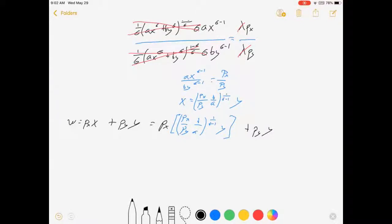All of that equals w. And so we've got this thing where we have y's and nothing else. If we can solve for y, we can get our Marshallian or Walrasian demand. So, let's see what we can do.